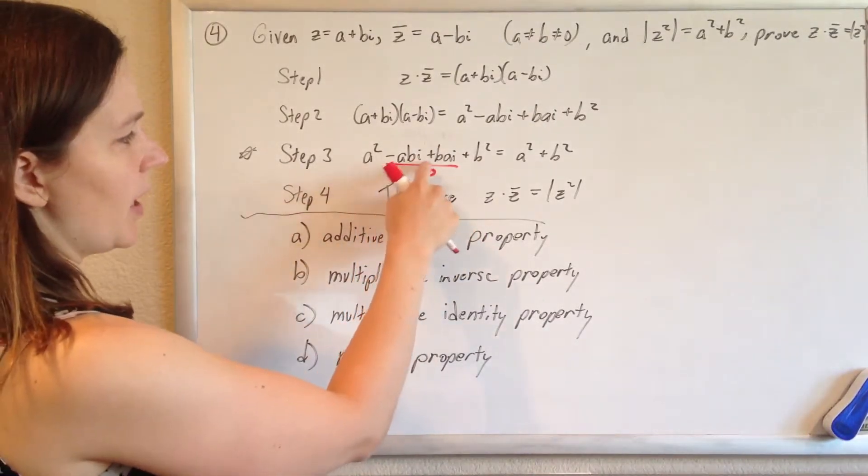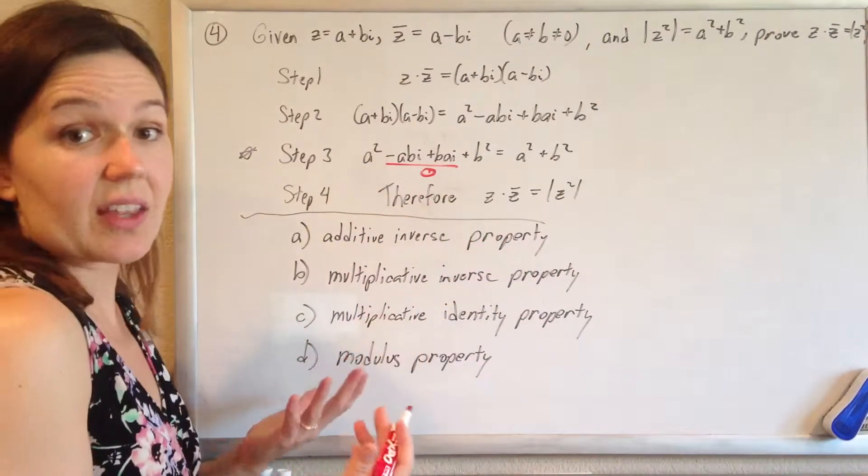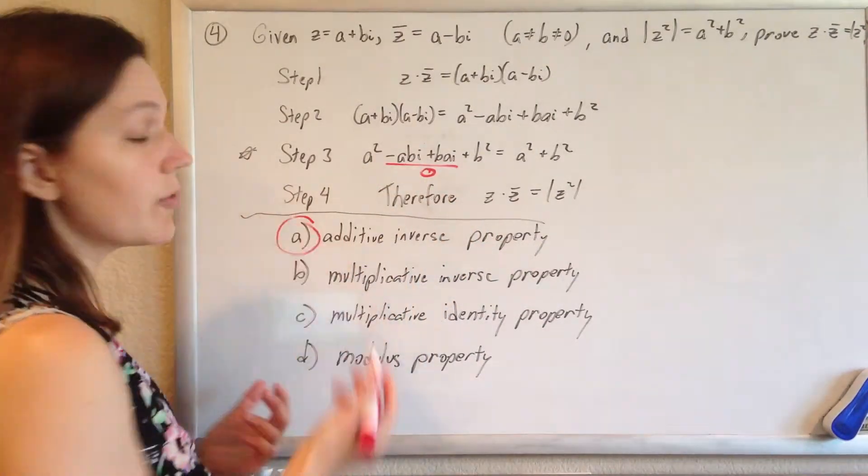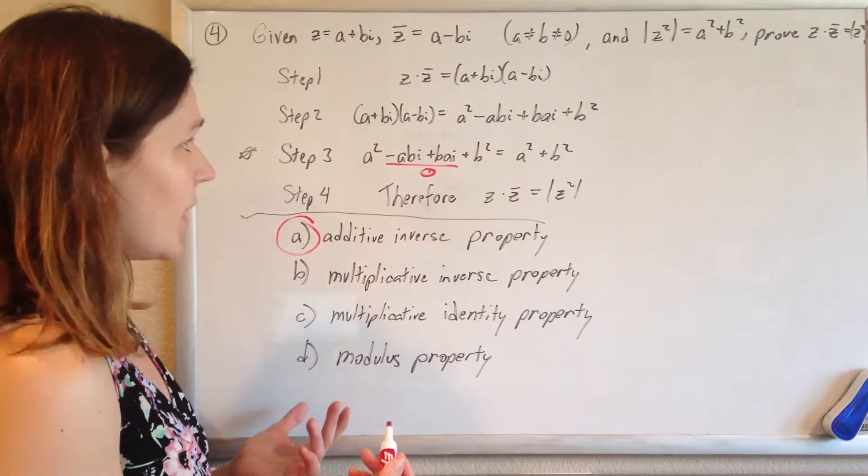We know that negative ABI plus BAI is just nothing, they cancel out, and that's your additive inverse property. And that's it.